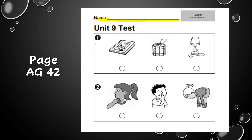Number one says: which thing can you use to make vibrations that make sound? Which thing can be used to make vibrations that make sound — is it a book, a drum, or a lamp? Which can you use to make vibrations to make sound?